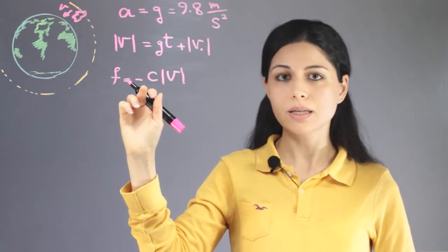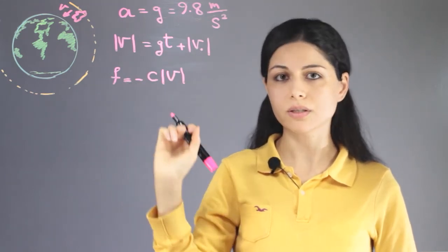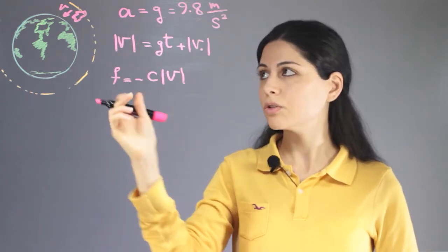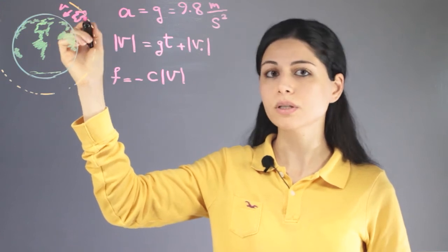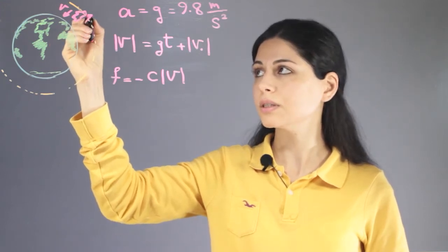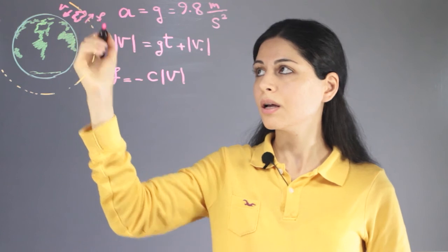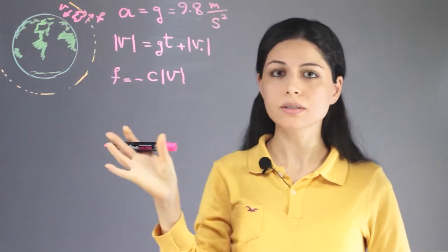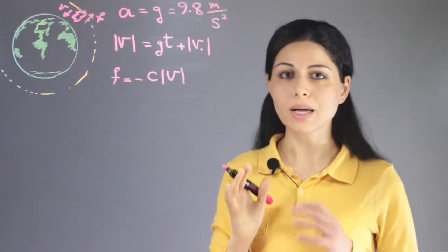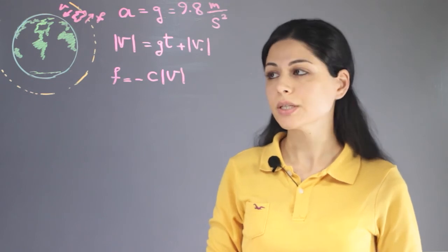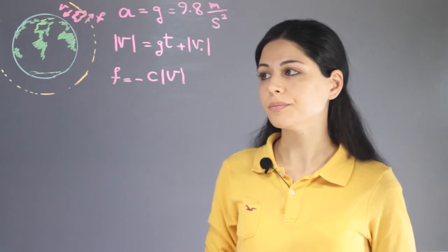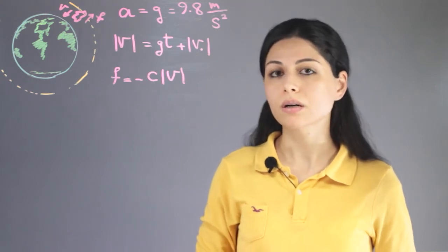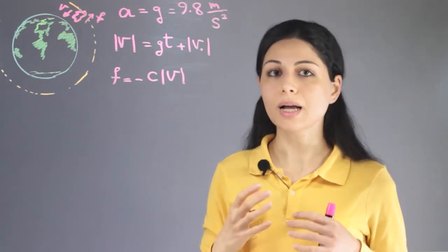This shows that the friction also increases as the asteroid's velocity increases, but acts in the opposite direction as indicated by the minus sign. The friction force acts in this direction and heats up the asteroid. When this friction force increases to high values, it can burn up the asteroid.